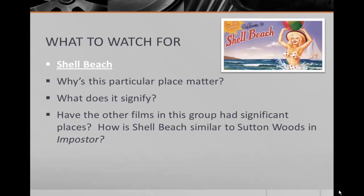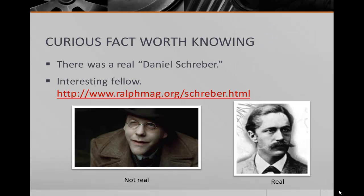One other significant element is place. There will be a lot of references to a place called Shell Beach, and it's important to ask yourself what it means and what it signifies — is it a symbol for something? Keep in mind other films in this group have also had significant use of place, whether it was the ship in Alien or Sutton Woods in Impostor. So be on the lookout for clocks, time, and Shell Beach. A curious fact worth knowing: Kiefer Sutherland is in this movie, playing a character named Daniel Schreber. There was a real Daniel Schreber — a very interesting fellow. I've included a link in case you want to learn more. Their behavior is not necessarily similar, but I'll leave it up to you to figure out what I mean.